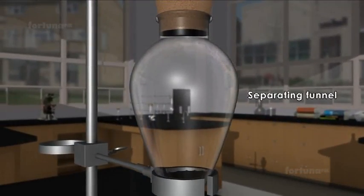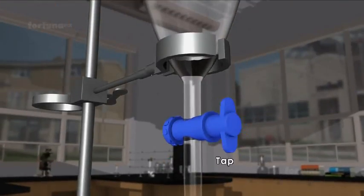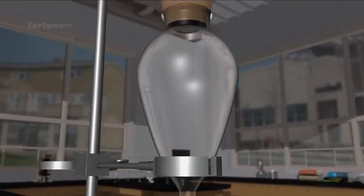The separating funnel is a cone-shaped glass container with a globe-like top. It has a stopper at the top and a tap at the bottom. Using a separating funnel,